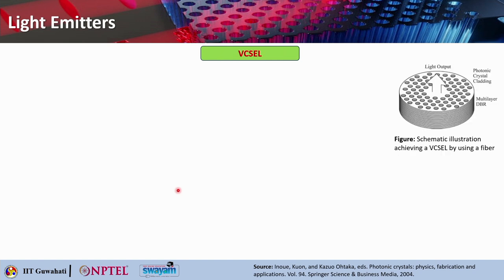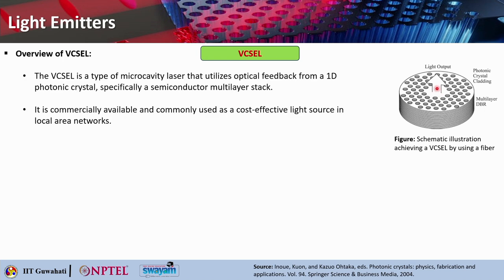Next we discuss VCSEL — vertical cavity surface emitting laser. Here you can see the construction: it is a stack of multi-layer distributed Bragg reflectors, then a photonic crystal cladding, and from there you get the light output. This VCSEL is a type of micro-cavity laser that utilizes optical feedback from a 1D photonic crystal — the distributed Bragg reflector, which is a semiconductor multi-layer stack. VCSEL is commercially available and commonly used as a cost-effective light source in local area networks (LAN). This mechanism involves use of single mode propagation in holey fibers or hollow core fibers made of photonic crystals.